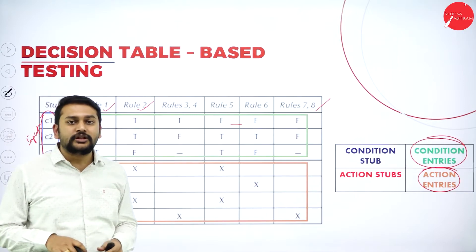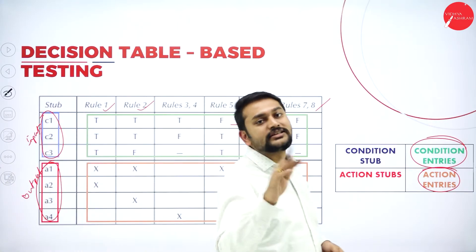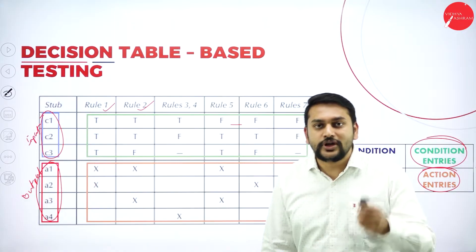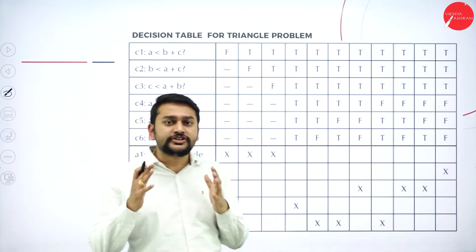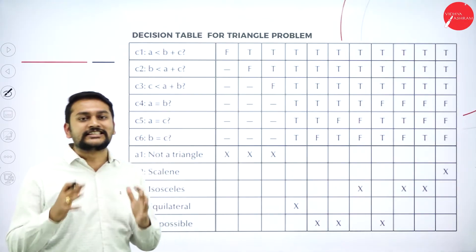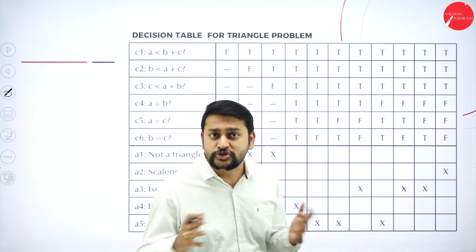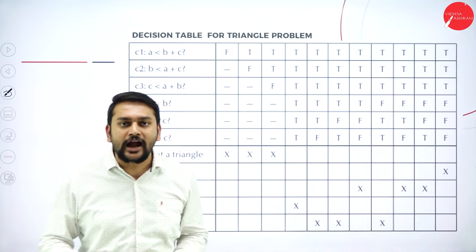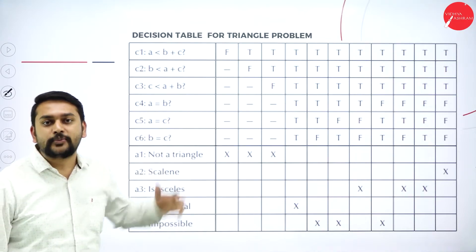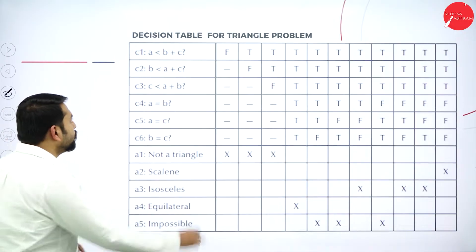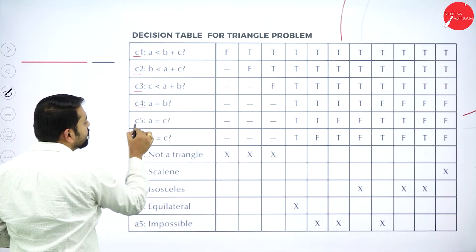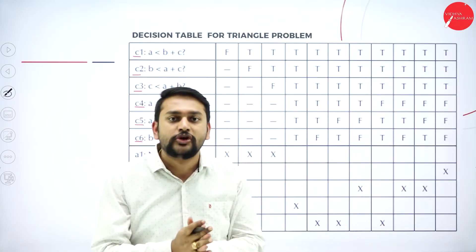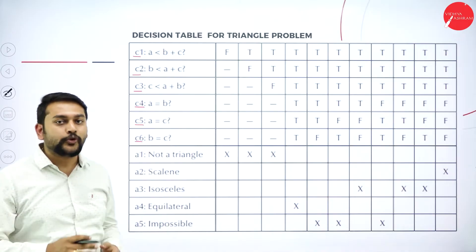Now that you know the skeleton of the decision table, let's take up the triangle problem and understand how to represent it using a decision table. I have C1, C2, C3, C4, C5, and C6 — the C series represents the conditional steps, that is, the different conditions I have as input. In total, I have six conditions.